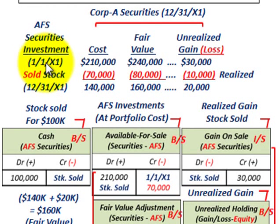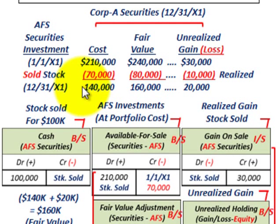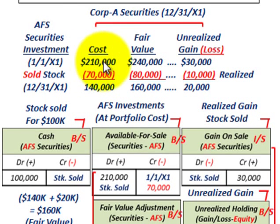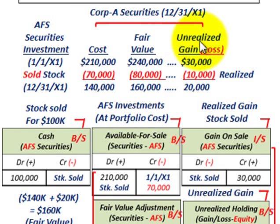We're going to look at one year here, starting at the beginning of the year, 1/1/X1, and then at the end of the year, 12/31/X1. At the beginning of the year, we had a cost on the securities of $210,000 and a fair value of $240,000. Since fair value is greater than cost, we would have had an unrealized gain of $30,000 on the securities.